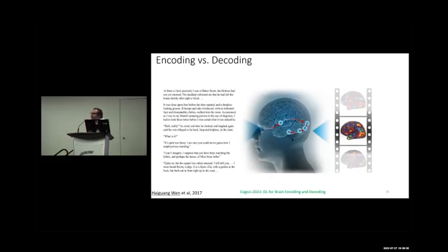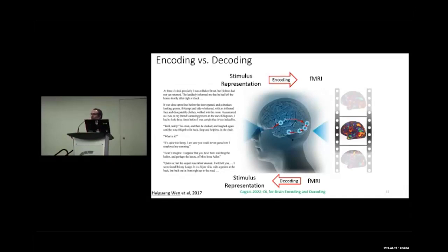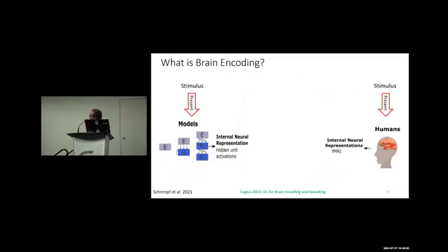In encoding, we present the stimulus as input — we show the stimulus to a subject and have measured brain activity. We present the stimulus representation as input to the encoder model and get fMRI as output. In decoding, fMRI is the input and we try to reconstruct the stimulus back.